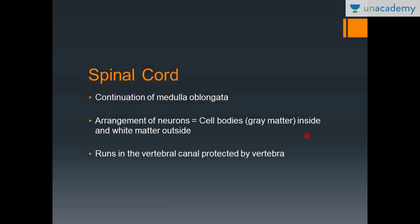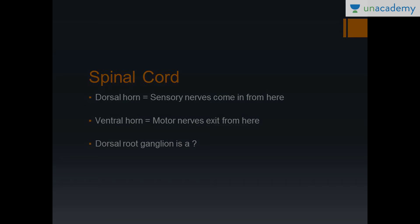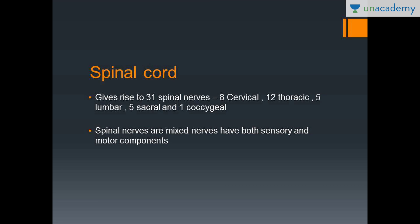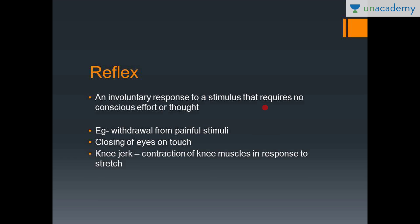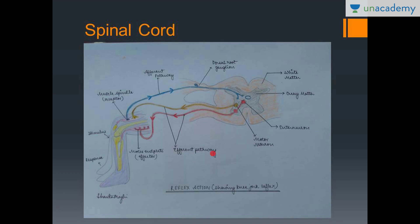To revise: the spinal cord is a continuation of the medulla oblongata. The gray matter is on the inside and white matter on the outside. It runs in the vertebral canal. The dorsal root has sensory nerves, the ventral has motor nerves, and the dorsal root ganglion is a pseudo-unipolar neuron. The spinal cord gives rise to 31 spinal nerves, which are mixed nerves. A reflex is an involuntary response to a stimulus requiring no conscious effort. Monosynaptic reflexes involve a single synapse, while polysynaptic reflexes involve more than one.